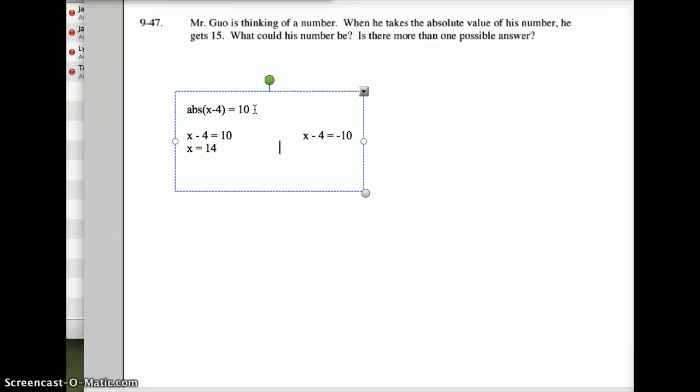So this becomes two equations. First equation is X minus 4, which is what's within the absolute value, can equal the 10, just as is stated in the first one. But then there's a second way you can do this, which is X minus 4 equals the opposite of 10 or negative 10. And then we have to solve these algebraically. So on the first one here, X minus 4 equals 10. Add 4 to both sides, so we get X equals 14. On the second one here, we add 4 to both sides, so we get X equals negative 6.